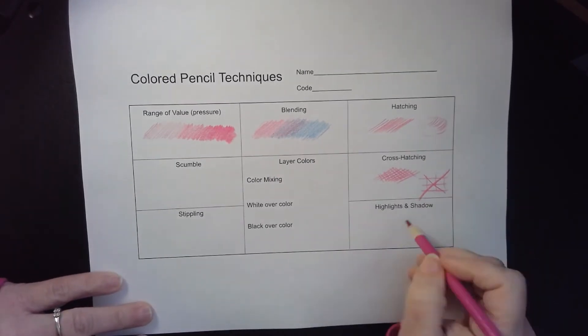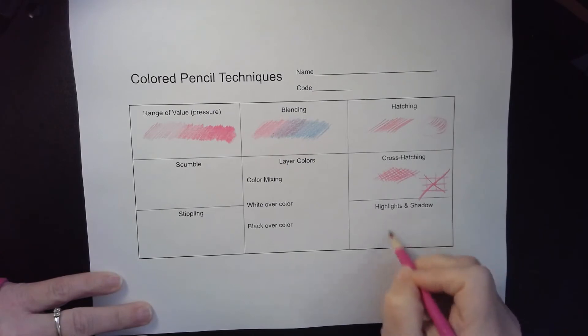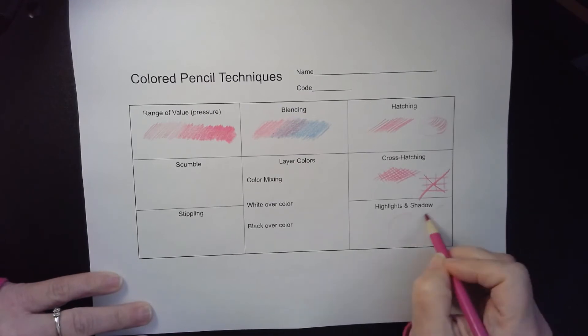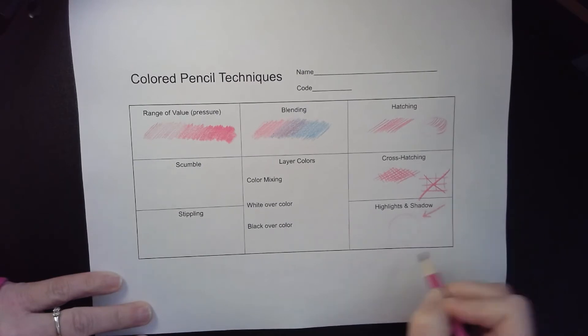Highlights and shadows—let me see if we have an object here. So I have a sphere and the light is coming from this direction over here. The light is coming this direction, so I'm going to have an area over here where I am not going to put any color because that is the light bouncing back off.